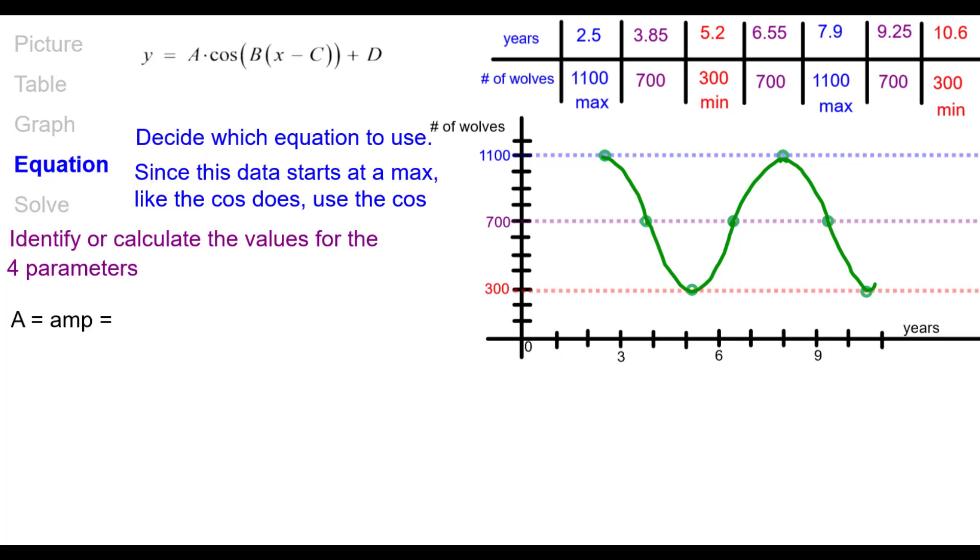Recall that A is the amplitude. And that's found by taking the max minus the min and dividing it by two. And when I do that, I get 400. So capital A is 400. That's its value. You can also see it on the graph. It's half the height of the graph, so to speak, or from the points of inflection to the max, or points of inflection to the min.